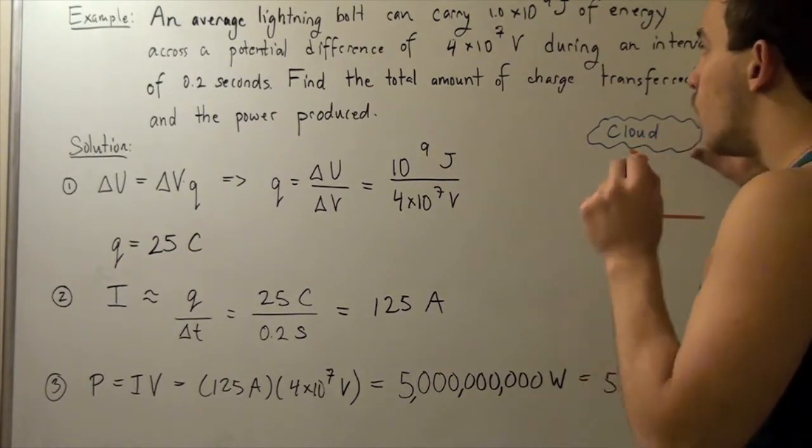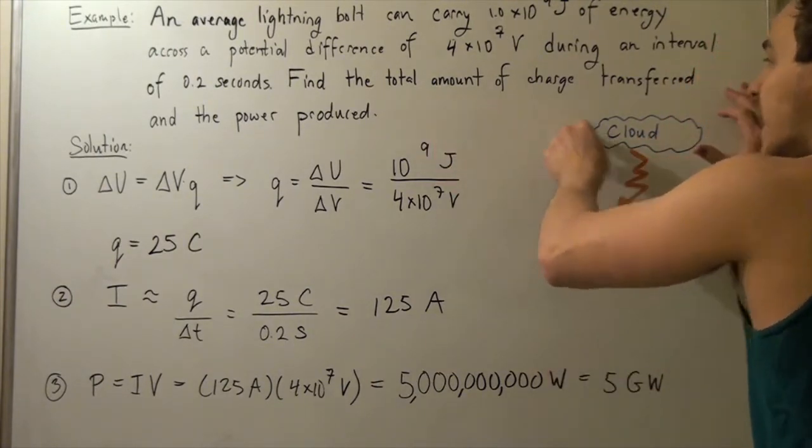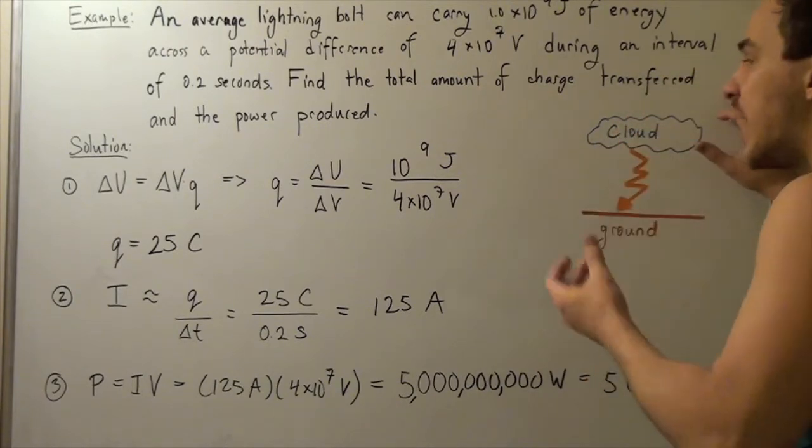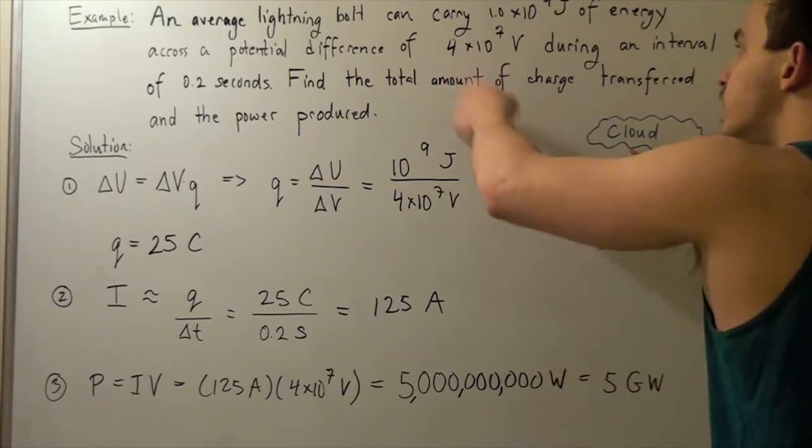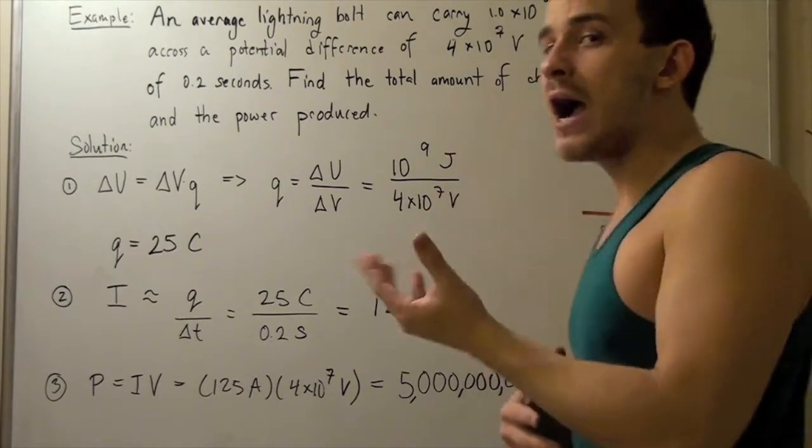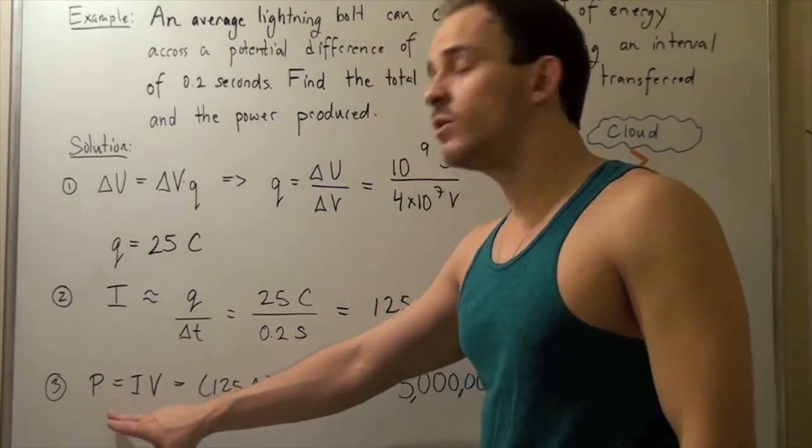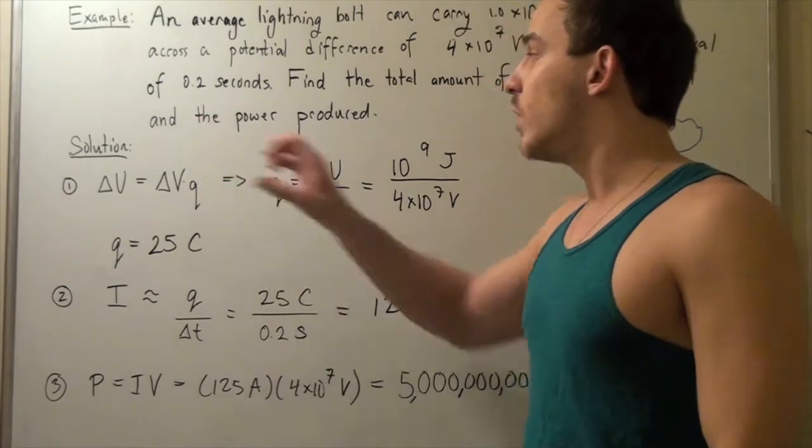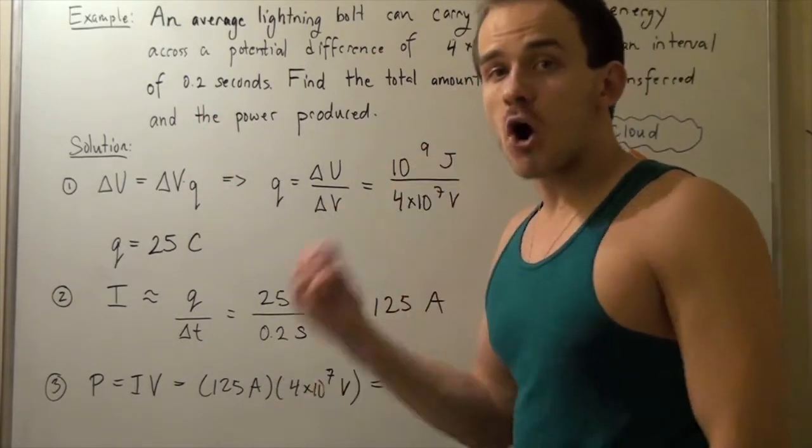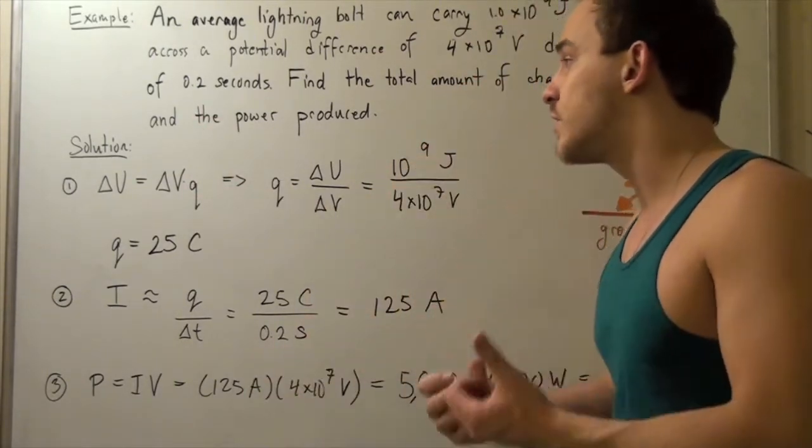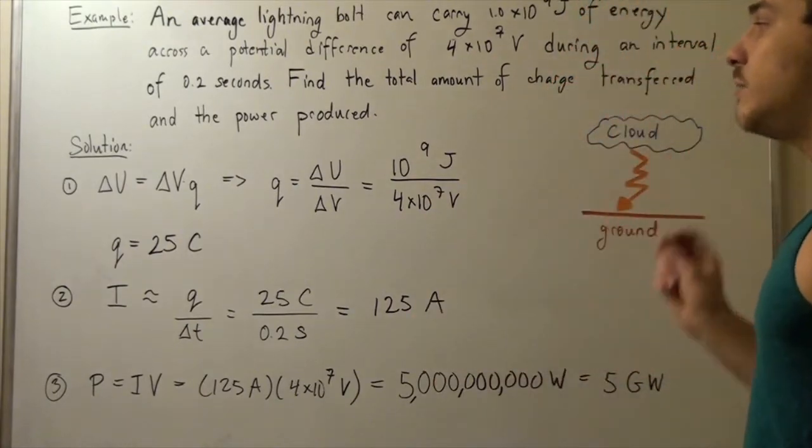Now, the reason we want to find the amount of charge is because that will help us find our current. And using our current and voltage, we can then find the power using the formula P equals I times V. So let's begin. First, we must find our charge, or the total amount of charge transferred by this single lightning bolt.